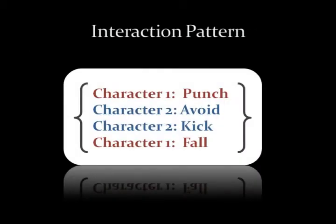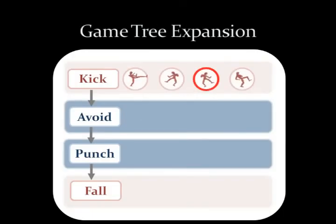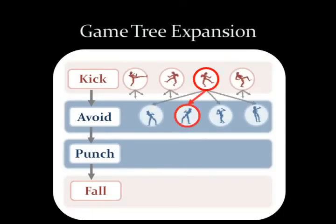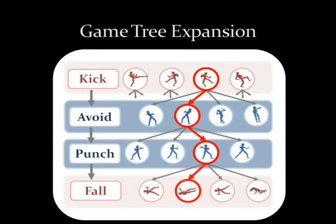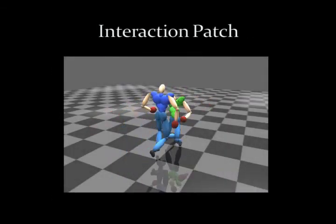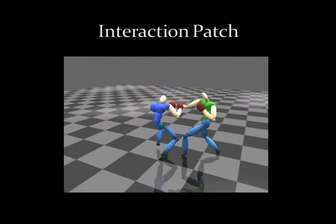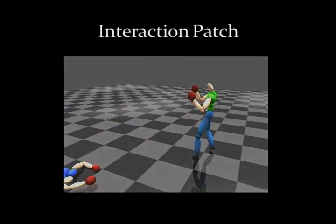During the offline process, the user first specifies the required pattern of interaction. Then the system automatically searches for the series of actions by expanding the game tree. The plausible series of actions are saved in the database as units called interaction patches.